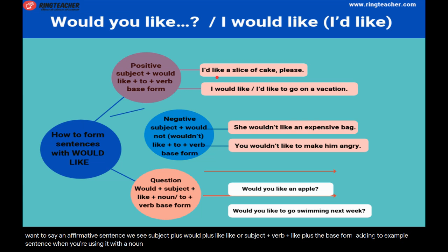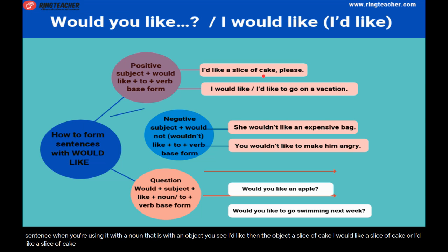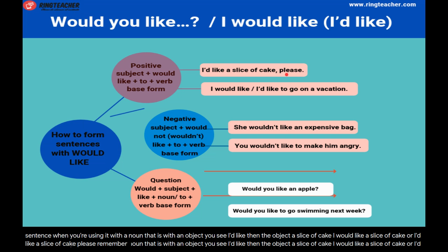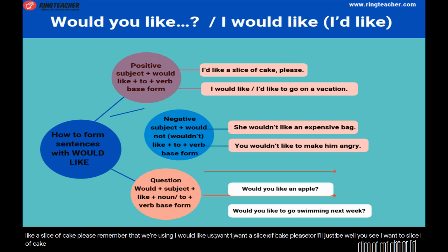When using 'would like' with a noun (an object), you say: 'I'd like a slice of cake' or 'I would like a slice of cake.' Remember, we're using 'I would like' as a more polite alternative to 'I want.' Instead of 'I want a slice of cake,' you say 'I'd like a slice of cake, please.'